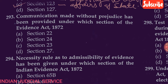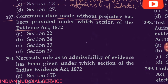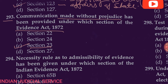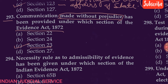Question number 293: Communication made without prejudice has been provided under which section of the Evidence Act 1872 — Section 22, Section 24, Section 23, or Section 27? The answer is Section 23, because communication made without prejudice is provided under Section 23 of the Evidence Act.